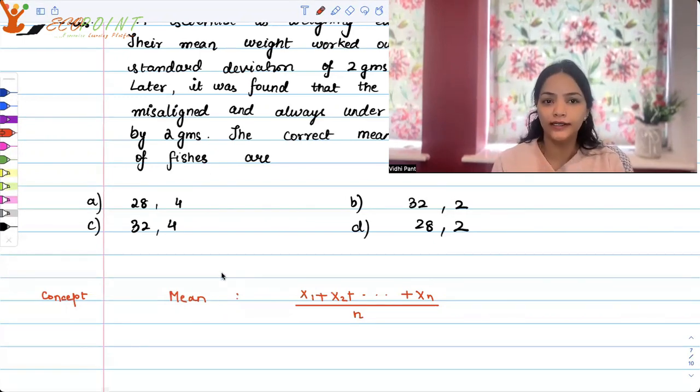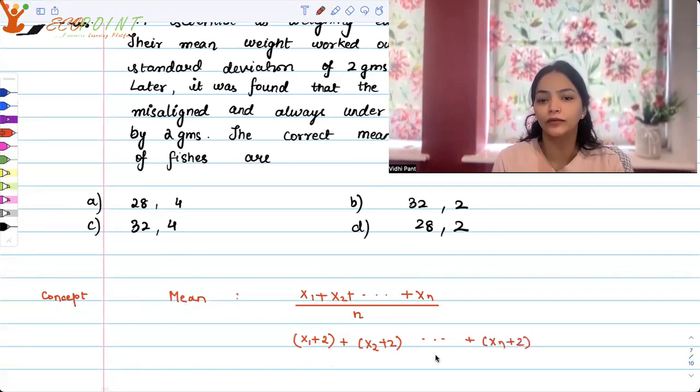Now what is happening in this question is that every value is under reported by 2 grams. So each value actually is 2 more than what they reported. So it's x1 plus 2, x2 plus 2, so on and so forth till xn plus 2, whole thing upon n because observations are n only.